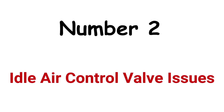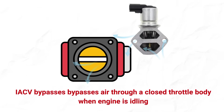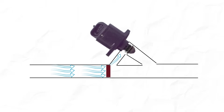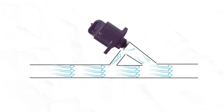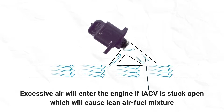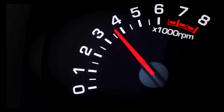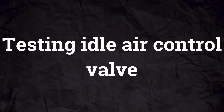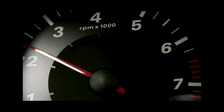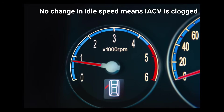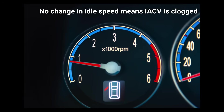Cause #2: Idle air control valve issues. This valve bypasses air through a closed throttle body when the engine is idling or the vehicle is stopped at a stoplight. The idle air control valve can get clogged with oil and carbon deposits and get stuck closed or open. If it's stuck open, excessive air will enter the engine, disturbing the air-fuel ratio and causing RPM fluctuations. To test it, unplug its harness connector and observe if the engine RPM drops significantly — if there's no change in idle speed, the valve is clogged.